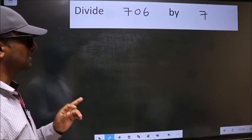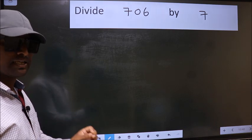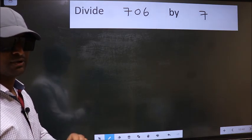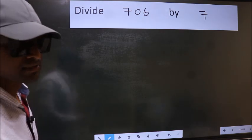Divide 706 by 7. While doing this division, many do this mistake. What is the mistake that they do? I will let you know. But before that, we should frame it in this way.